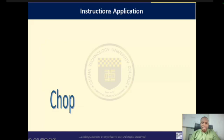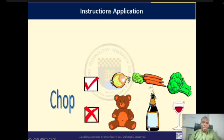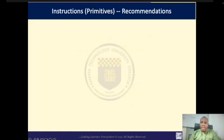Now let us look at some differences between instructions that are issued. If we give an instruction like 'chop,' that can apply to onion, carrots, or broccoli. But if you have items like a teddy bear or wine, how do you expect to chop those? So whenever you are giving instructions, they should be ones that can actually be carried out. When writing algorithms, make each instruction very simple and unambiguous.